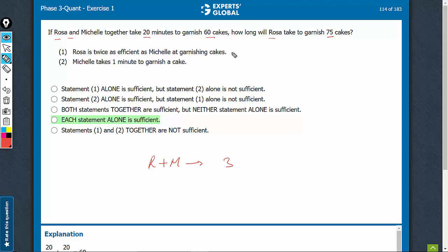Statement 1 alone will be sufficient. This means that Rosa is garnishing 2 per minute and Michelle is garnishing 1 per minute. 1 is sufficient.